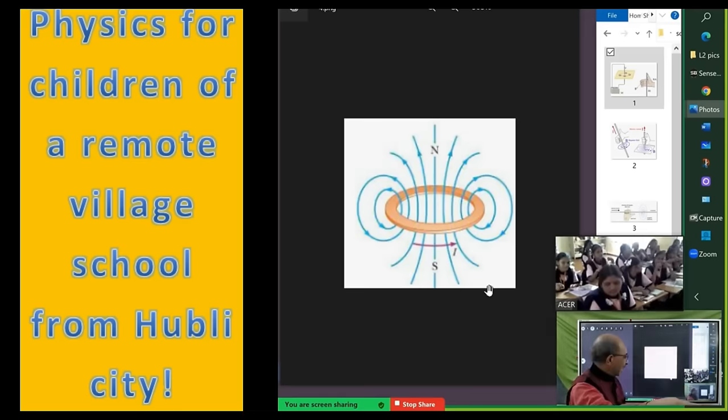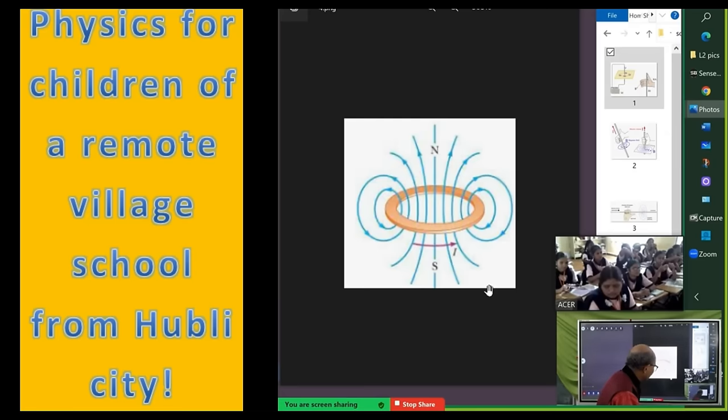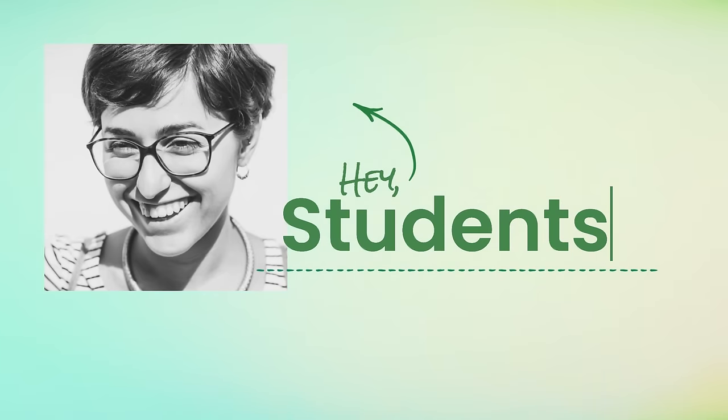Now the thumb is in the direction of the current. Your fingers are showing what? The direction of the magnetic field. So now the thumb is in the direction of the current. Your fingers are showing what you can see. Did you get it? Yes. You got it.